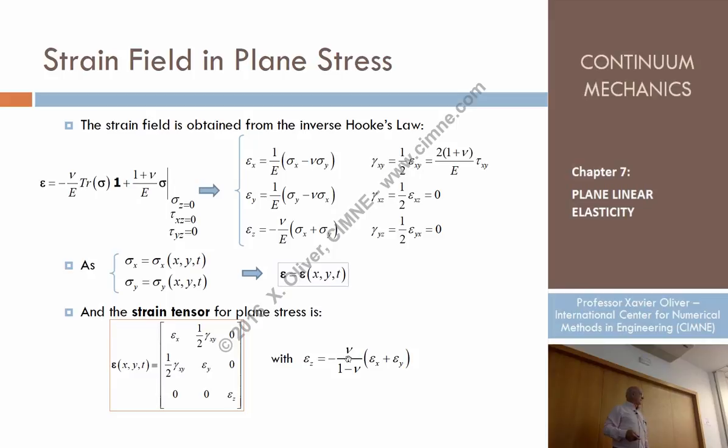For nu equals zero, that strain becomes zero. For the Poisson ratio equals zero, that strain becomes zero. And then that's a specific case in which the strain tensor is also plane, in the sense that there are no components out of plane. But that's not the general case.